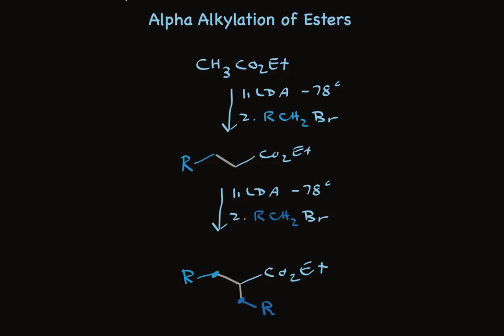And then we can repeat this. And I put colored dots at two of the carbons so we can track where they came from. There are two new carbon-carbon bonds which I've shown in tan. So starting with the simple molecule ethyl acetate, we can make complicated esters.